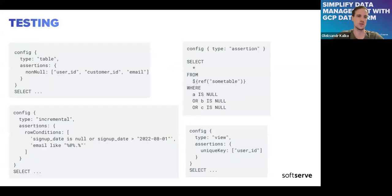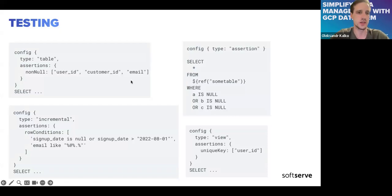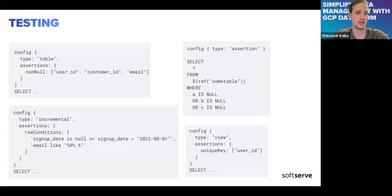Let's talk about testing — how we can test data consistency. These tests validate data as a result of your model execution. We define tests in an assertion block. There are default built-in tests such as not-null — for example, user ID, customer ID, and email should not be null. In case of test failure, the information is added to your log system via Cloud Logging, and you can create alerting to receive email notifications or similar.